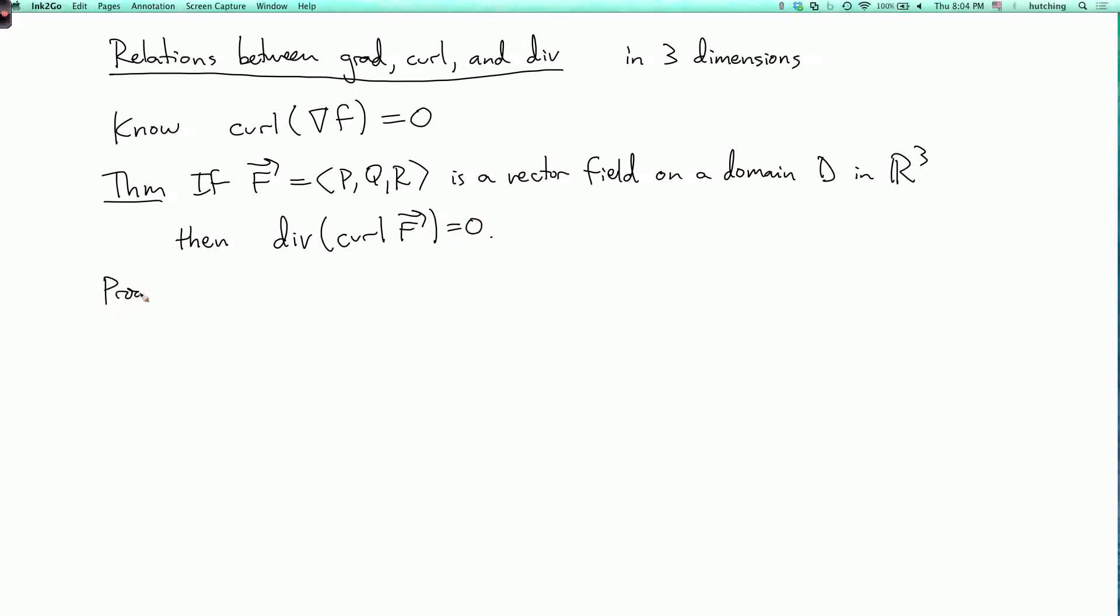For the proof, we just have to do the calculation. It's not so obvious, but let's do it. Remember, what's the curl of F? We take the derivative of r with respect to y minus the derivative of q with respect to z. So that's r_y minus q_z. Then we take the derivative of p with respect to z minus the derivative of r with respect to x. And then the last term is q_x minus p_y.